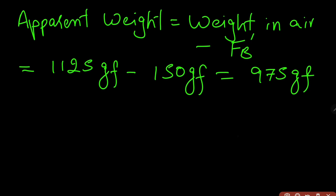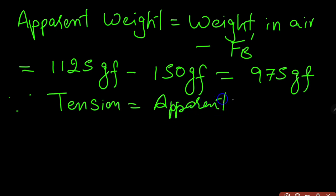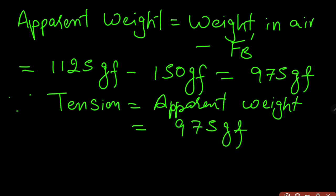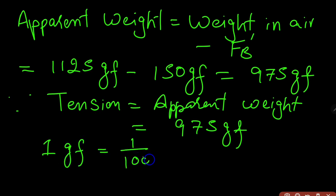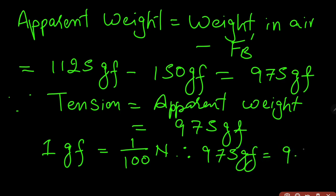This is the apparent weight. Since tension equals apparent weight, that is 975 gram force. But this answer might not match your book's answer, so I can convert this gram force into Newton. As you all know, 1 gram force = 1/100 Newton. Therefore 975 gram force = 9.75 Newton. I hope you understood number 8.